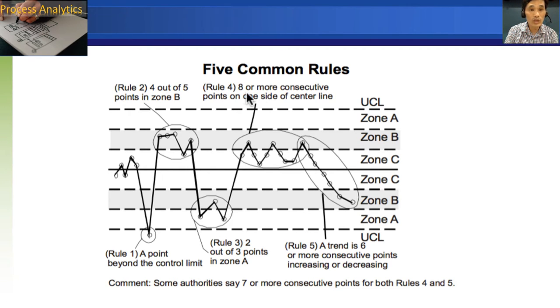Rule four, eight or more consecutive points on one side of the center line. It's supposed to oscillate, but it's staying on the other side like this, then it's problematic. And rule five, a trend is six or more consecutive points increasing or decreasing like this, then it's also a sign of a problem.